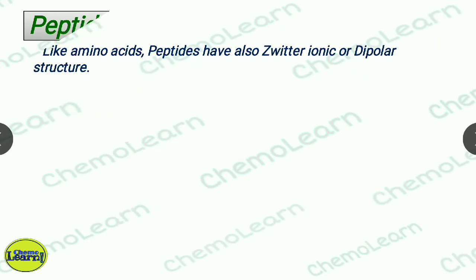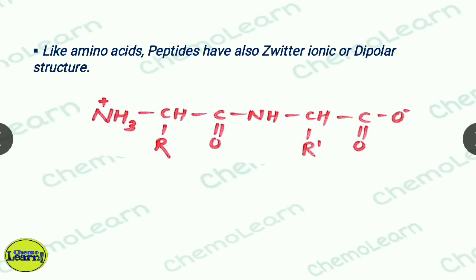Amino acids and peptides also have a zwitterionic structure — a dipolar structure with a positive part and a negative part. The NH3 plus is the positive part and COO minus is the negative part. The COOH-OH forms the peptide bond in the dipeptide.